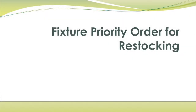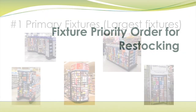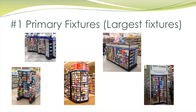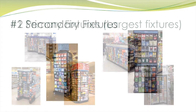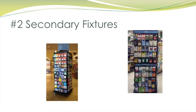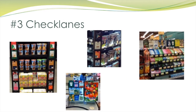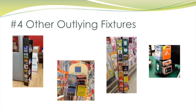If all fixtures appear to be in the same condition, either all excellent or all awful, follow this order to prioritize your merchandising. Number one: primary fixture — end cap or largest fixture in the store. Number two: secondary fixture — the next largest fixture, which is typically a tower. Number three: check lanes. Number four: other outlying fixtures, such as telecom, tiny tower, magazine rack, money center, etc. If you find that any fixtures are already stocked and look good, skip those and move on to the fixtures in bad shape.